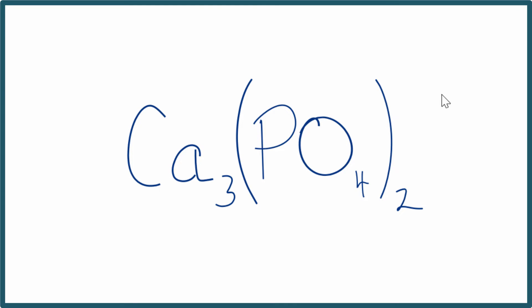Here's how you find the number of ions in Ca₃(PO₄)₂. This is calcium phosphate. So when we look at calcium phosphate,